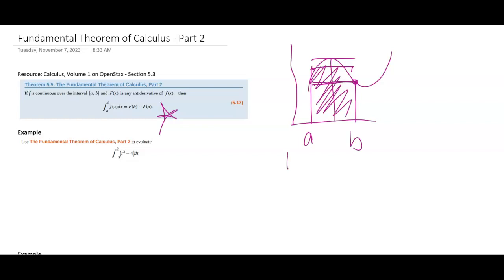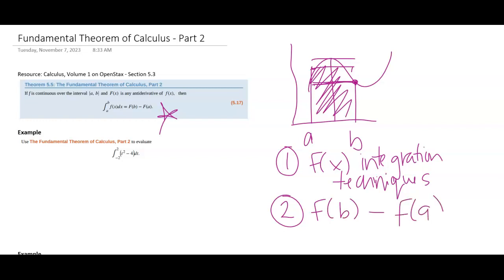Here's the steps in which you're going to do it. You're going to find big F of x using integration techniques, and then you're going to plug in b into that antiderivative and you're going to plug in a, and then you're going to find the difference between the two.